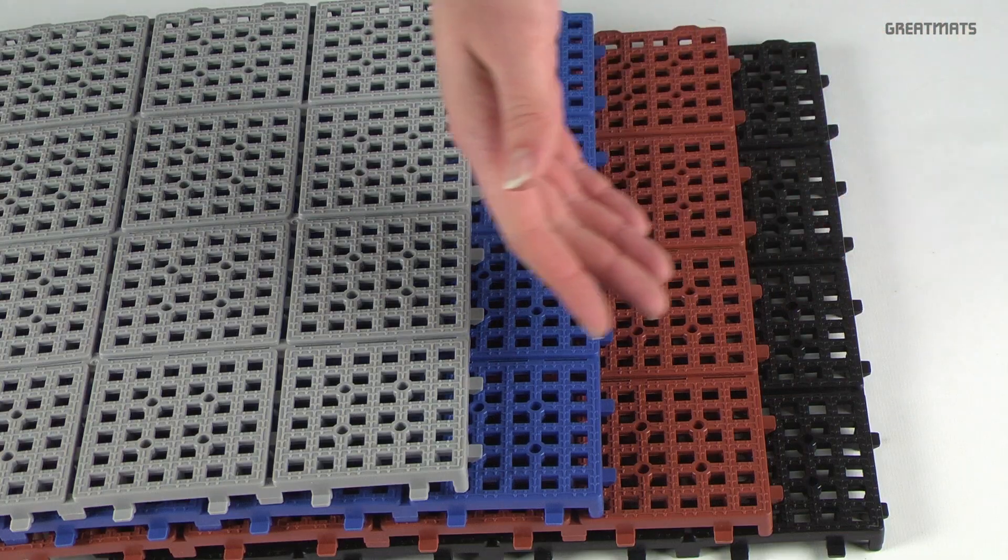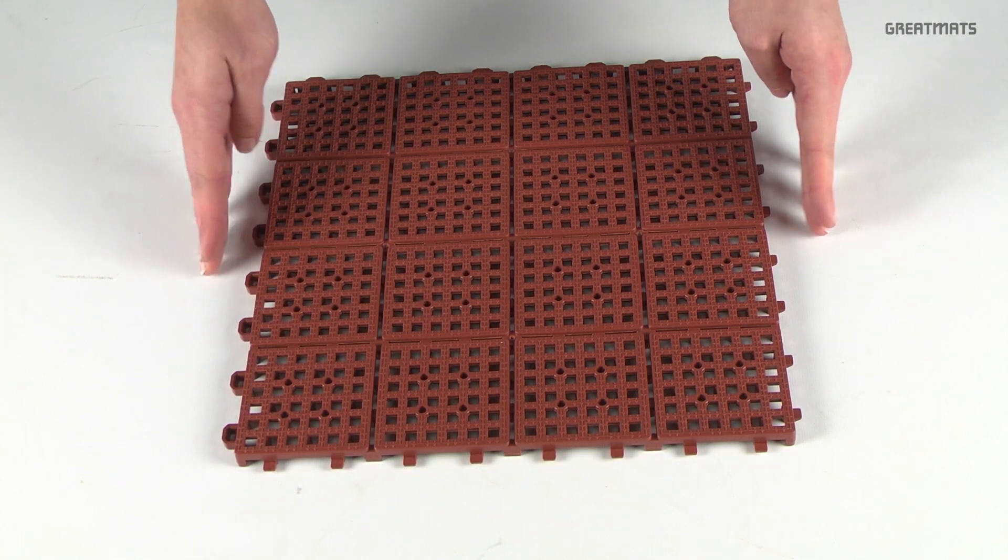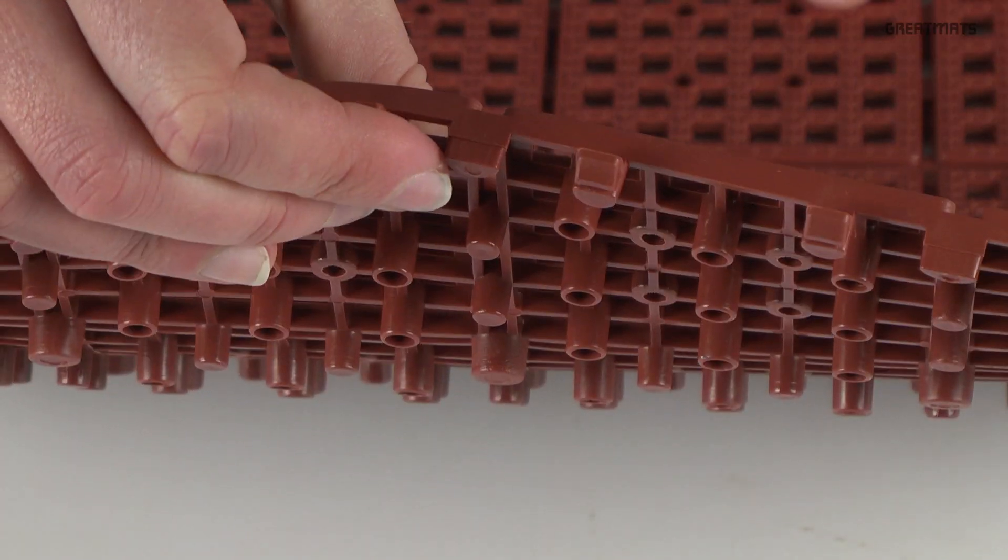Available in four different colors, this flexible outdoor tile is 1 by 1 foot in size and 1 half inch thick.